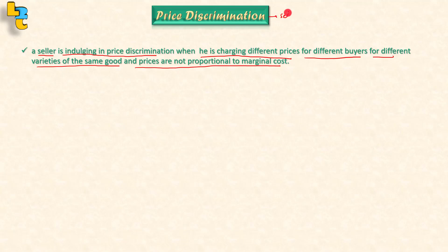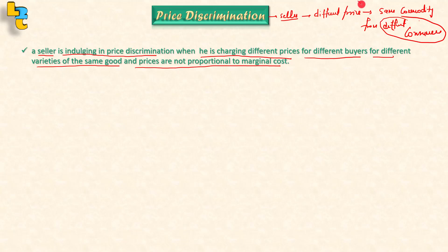In simple language, price discrimination is when a seller charges a different price for the same commodity from different consumers. We say price discrimination also occurs when prices are not proportional to marginal cost.